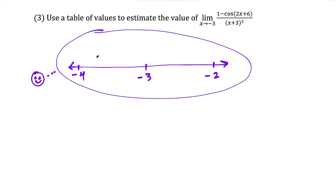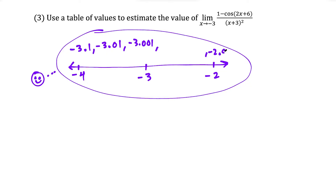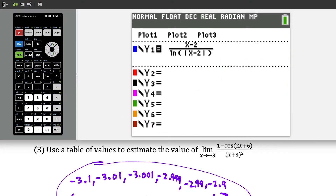From the left, the first decimal getting closer to negative 3 is negative 3.1, then negative 3.01, then negative 3.001. It's usually safe to use three values — there's no agreed-upon amount, but three is the standard. From the right side, to get really close to negative 3, start with negative 2.9, then negative 2.99, then negative 2.999. Theoretically you could put 1,000 nines after the decimal, but this should be good enough. Now let's go back to the y equals and type in this function.